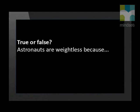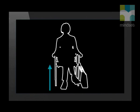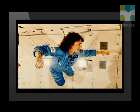True or false: astronauts are weightless because the astronauts are far from earth's surface at a location where gravitation has minimal effect. False as well. To understand the idea of weightlessness, we have to investigate the forces involved. We cannot feel gravity. What we can feel is the reaction force of the ground when we stand on it, or the reaction force of a chair when we sit. This is an example of Newton's third law. Weightlessness is the feeling we experience when there are no contact forces. Weightlessness is only a feeling, and you still weigh as much as you always do.